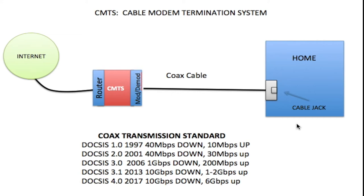If you decide to buy a modem, you need to call your local ISP to find out what DOCSIS standard that modem should have. Every modem made since 1997 has a DOCSIS standard, from DOCSIS 1.0 right up to DOCSIS 4.0 in 2017. The DOCSIS standard within the CMTS has to be the same as your modem or it will not work. That is why you have to call your local provider to find out what DOCSIS they are using so that the modem you buy matches their current standard.